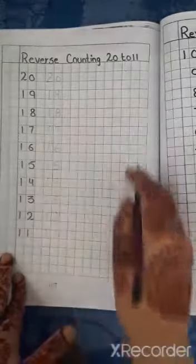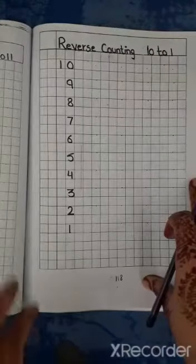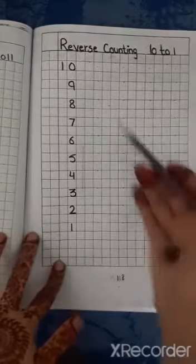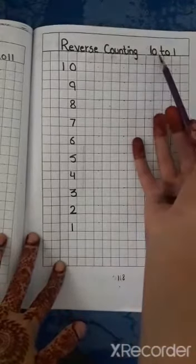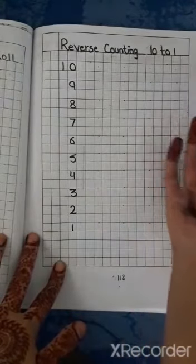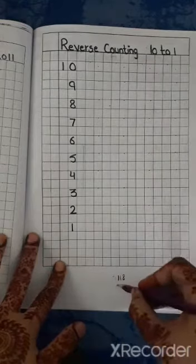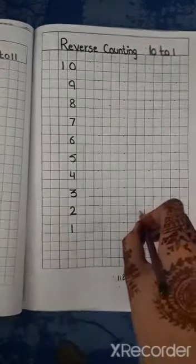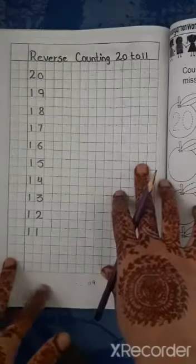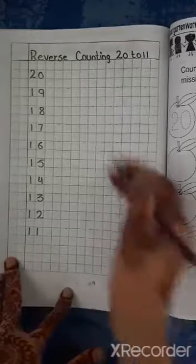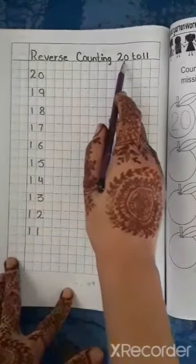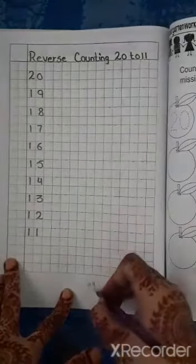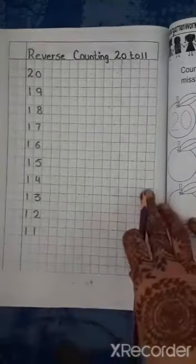Now do the rest of page as your homework. Now open page number 118, reverse counting from 10 to 1. Page number 118 is your homework. Now open page number 119, reverse counting from 20 to 11. 119 page is also your homework.